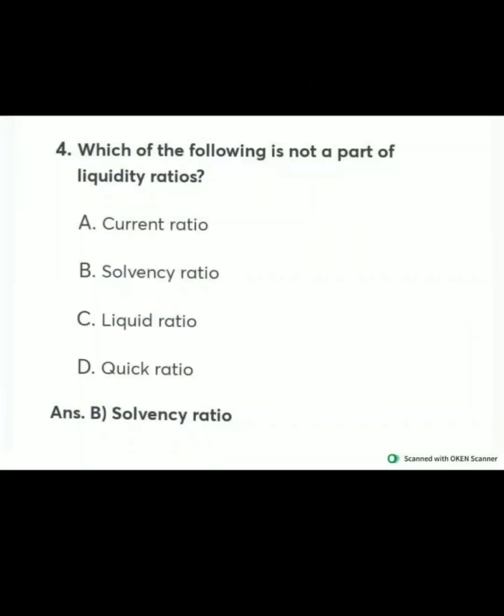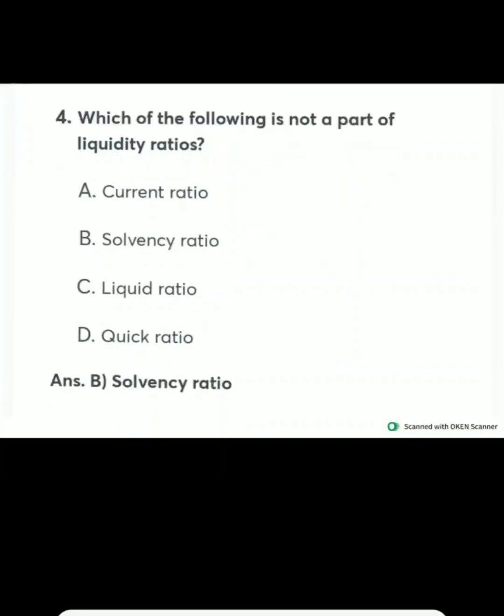Which of the following is not a part of liquidity ratio? Liquidity ratios are current ratio, liquid ratio, and quick ratio — these three ratios are liquidity ratios. Solvency ratio is not a liquidity ratio.